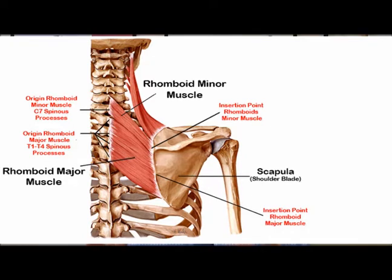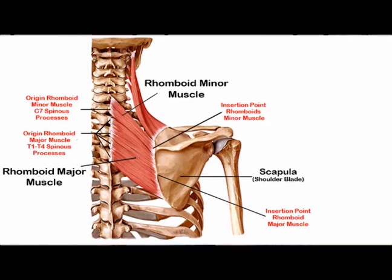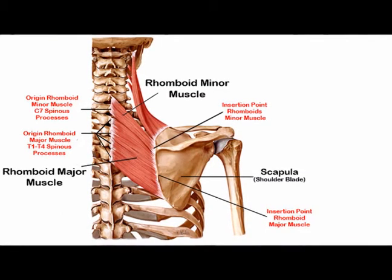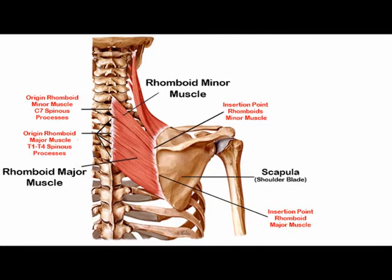The rhomboid minor originates on the nuchal ligament and the spinous process of vertebrae C7 and T1. It inserts into the medial border of the scapula adjacent to the scapular spine.